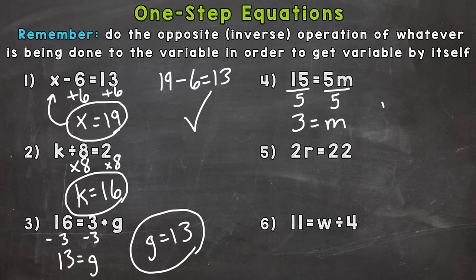Let's double check. 5 times 3 does equal 15. So we have the correct answer there. Number 5. We have 2r equals 22. So we're multiplying by 2. Again, number next to a letter means multiplication. So we need to divide both sides by 2.